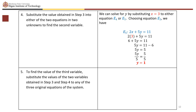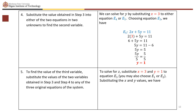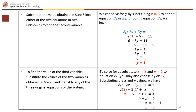To find the third variable, substitute x equals 3 and y equals 1 into e sub 3 (2x minus 2y plus z equals 4). We get 2 times 3 minus 2 times 1 plus z equals 4, that is 6 minus 2 plus z equals 4, giving 4 plus z equals 4. Subtracting 4 from both sides, we get z equals 0.